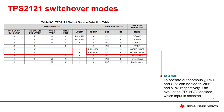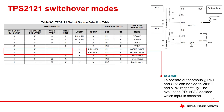Our most popular mode is XCOMP mode. This allows the device to operate autonomously by tying PR1 and CP2 to VN1 and VN2 respectively. The evaluation of PR1 relative to CP2 then decides which input is selected. In XCOMP mode, VN1 and VN2 serve as voltage references for PR1 and CP2 respectively.